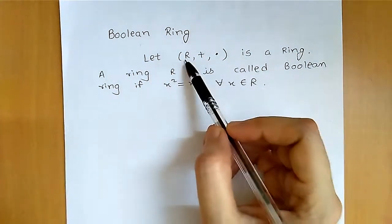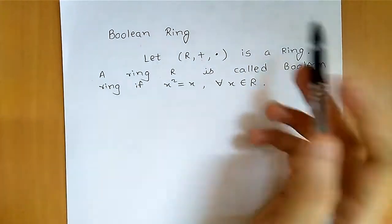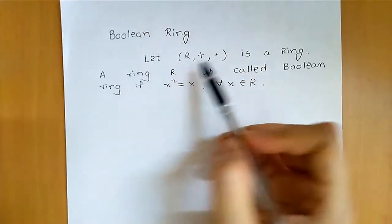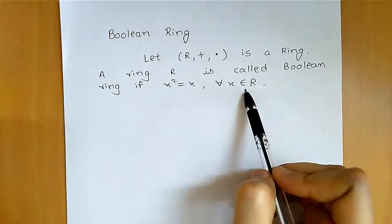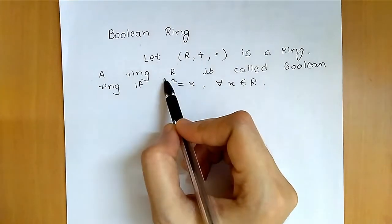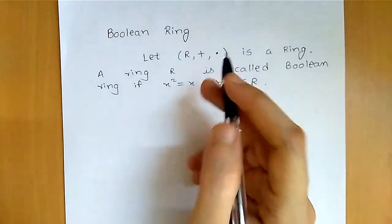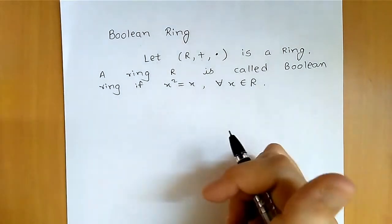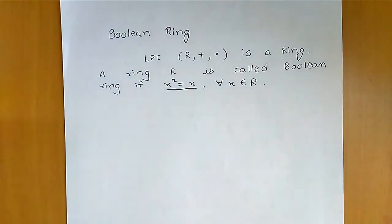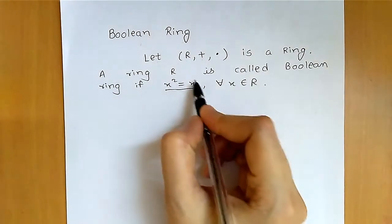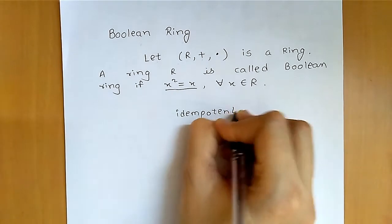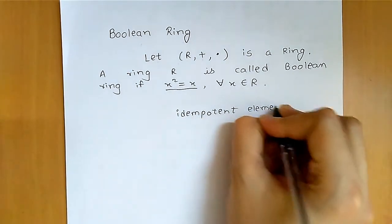So let's see the definition. Let R under addition and multiplication be a ring — first we need a ring for a Boolean ring. A ring R is called a Boolean ring if x squared is equal to x for all x belonging to R. Whatever element is in R, if it satisfies this property, then that ring R will be called a Boolean ring.